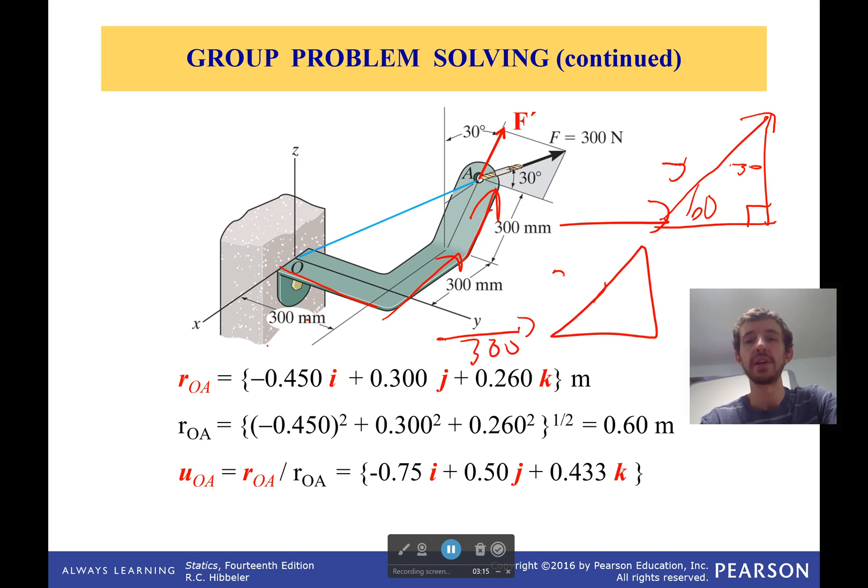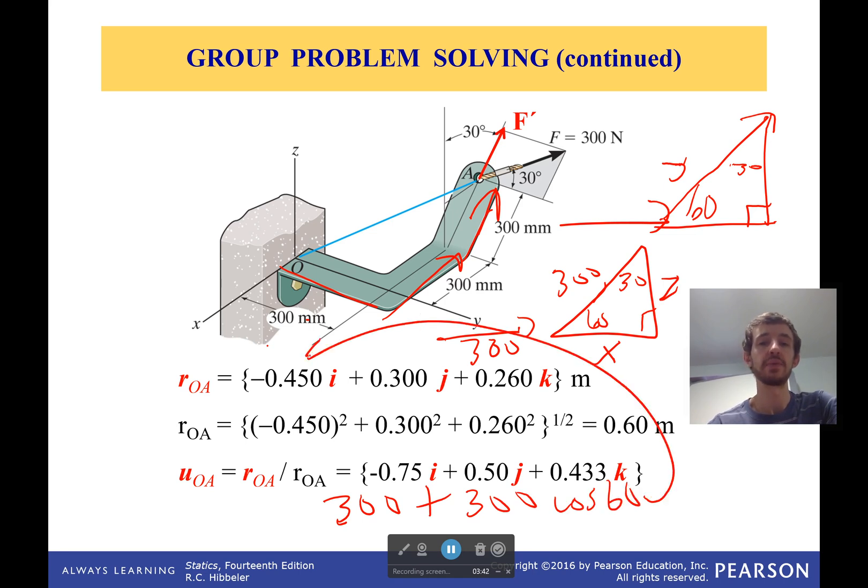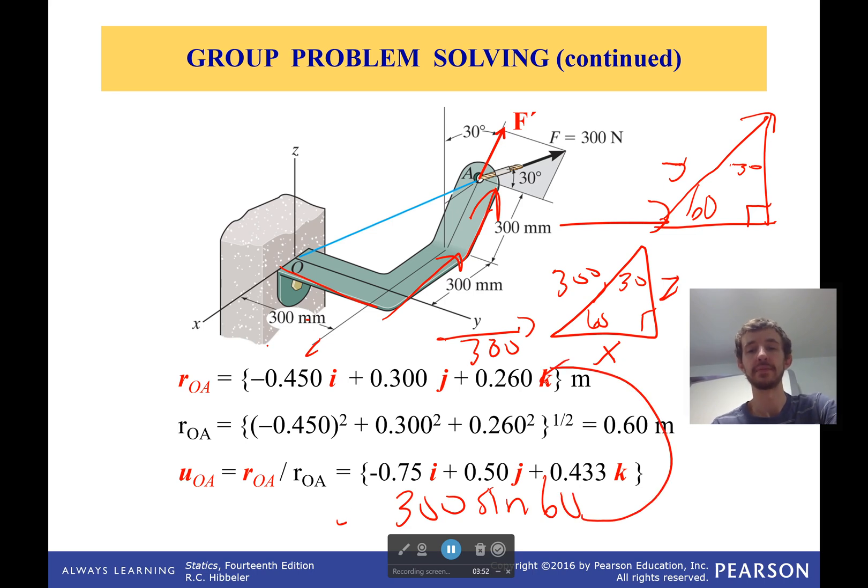So we have 300 here. We have 300 here. We want to find out the total x distance. We need to figure out where this x position is right here. And we definitely need to figure out what the z position is right here. So similar triangles. That's 30 degrees. That's 60. That's 90. And then we can solve. So the x position would be 300 plus 300 cosine of 60, which comes out to be 450. And the z position would be 300 sine of 60, which comes out to be that.